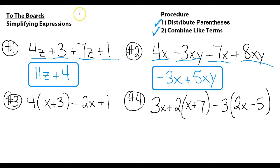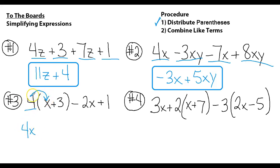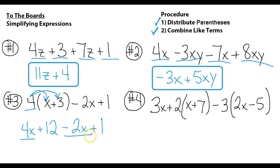Number three: step one is to distribute. We multiply the 4 into all values inside the parenthesis: 4 times x is 4x, and 4 times 3 is 12. Then we have minus 2x + 1. Now combine like terms: 4x minus 2x is 2x. Then 12 + 1 = 13. Answer for number three: 2x + 13.